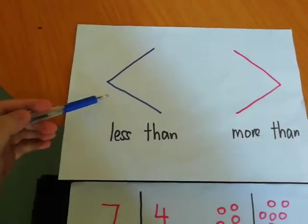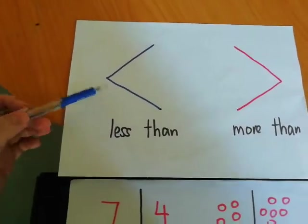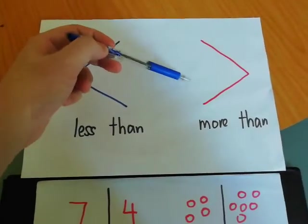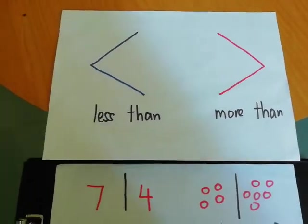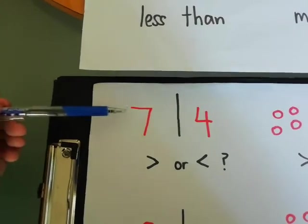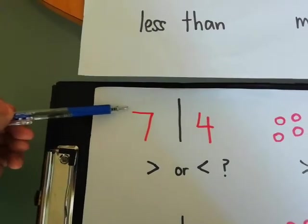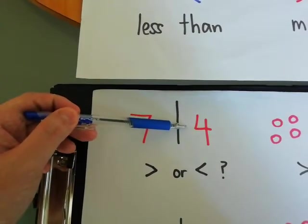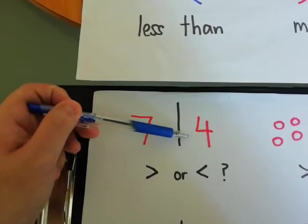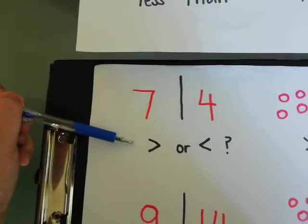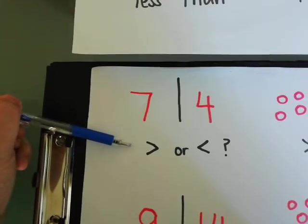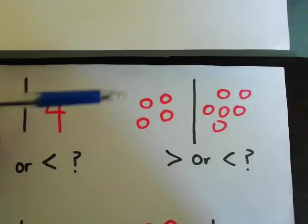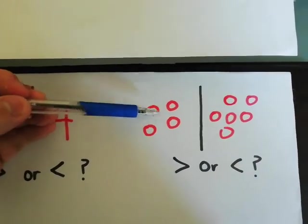Remember, arrow to the left means less, arrow to the right means more. Let's look at the first question: seven and four. Seven is more than four, so which symbol is it?